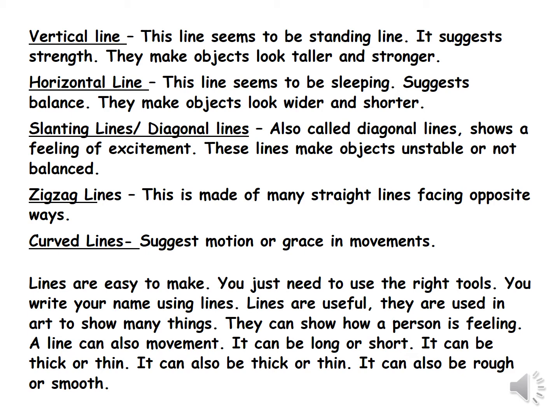The third one is what we call the slanting lines or diagonal lines. The fourth one is what we call the zigzag lines. This is made of many straight lines facing opposite ways. And the fifth line is what we call the curved lines. It suggests motion or grace in movements.